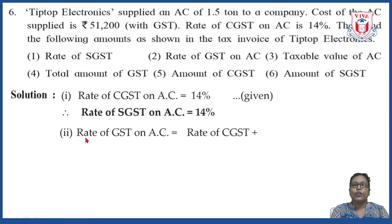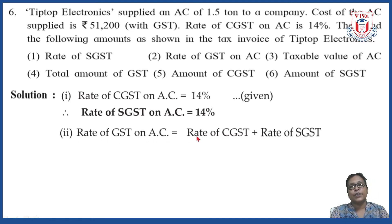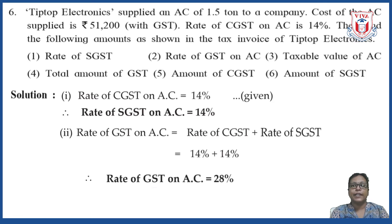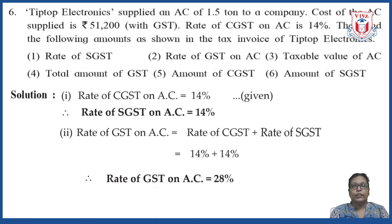For the second question: rate of GST on AC equals rate of CGST plus rate of SGST, so 14% plus 14% equals 28% — exactly double.